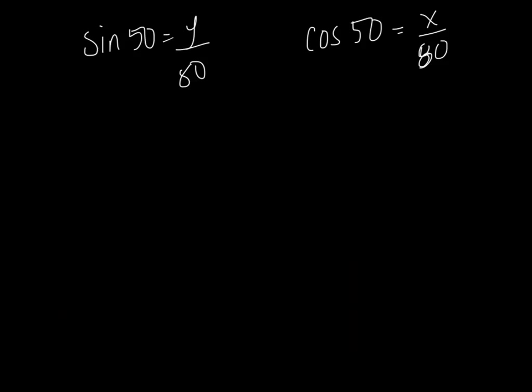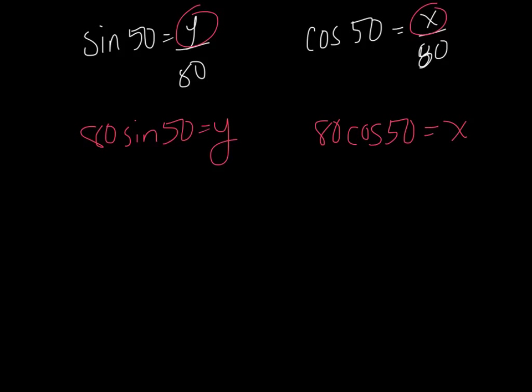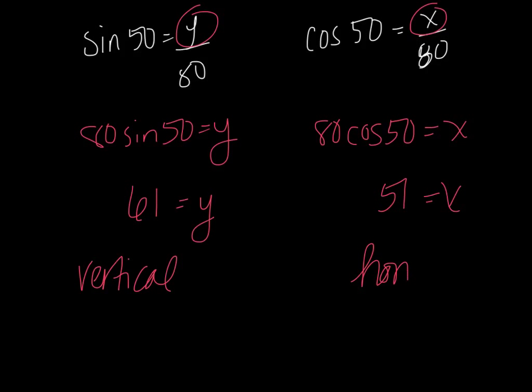So then we're just going to solve these algebraically. I'm solving for y, I'm solving for x. So I'm going to say 80 sine 50 equals y. 80 cosine 50 equals x. When I plug that into my calculator and round, I get y equals 61, and I get x equals 51. So y was our vertical component, and x was our horizontal component.